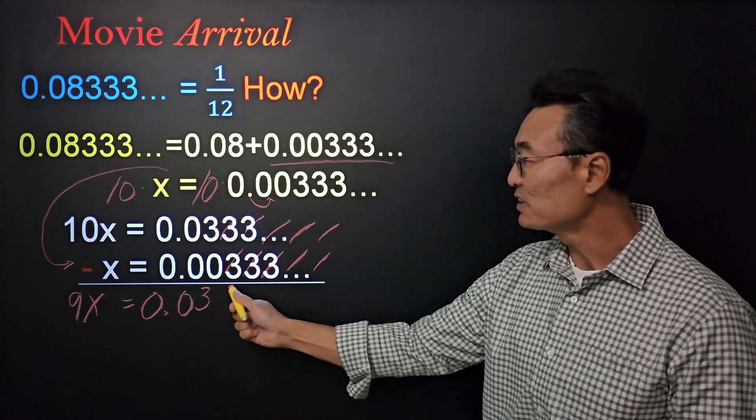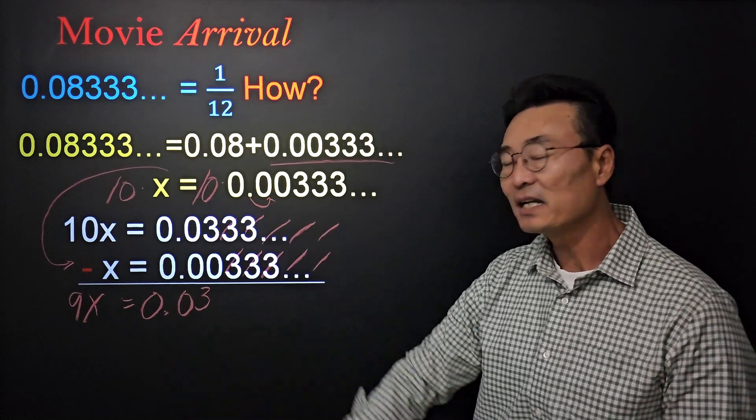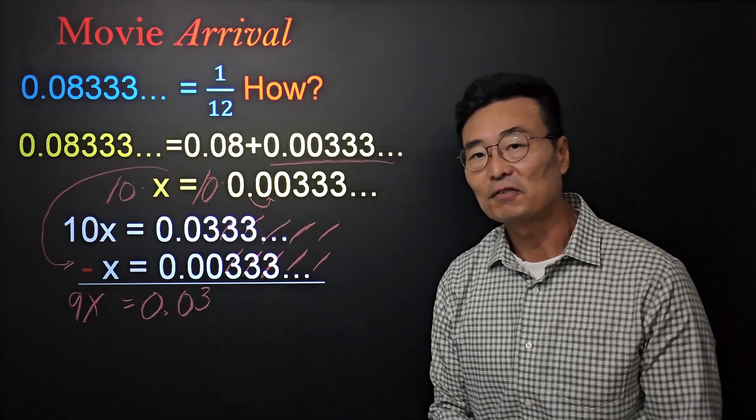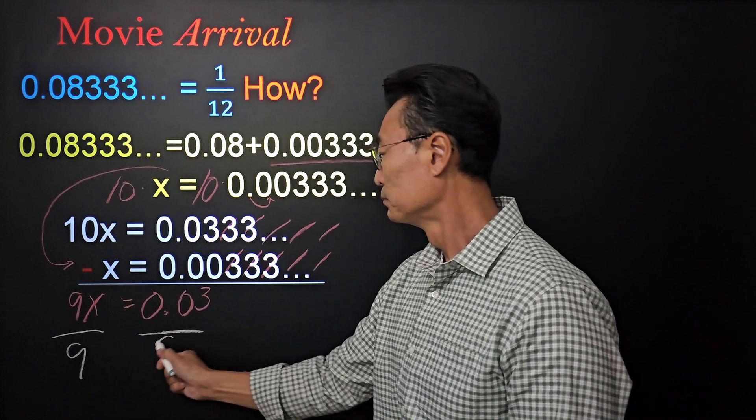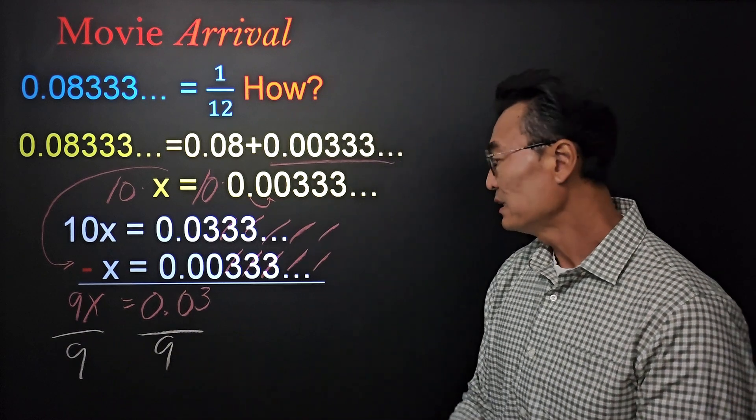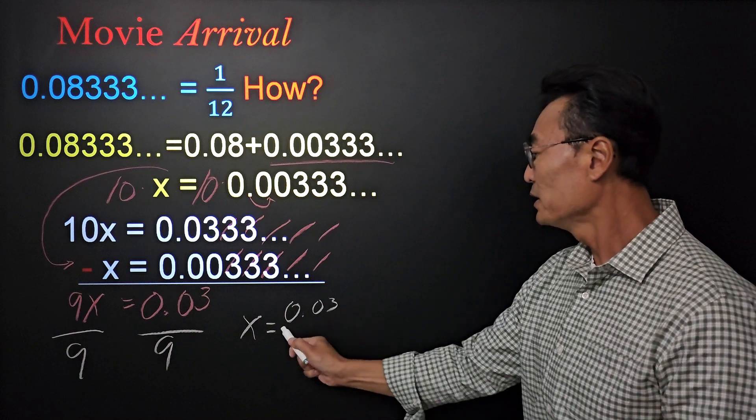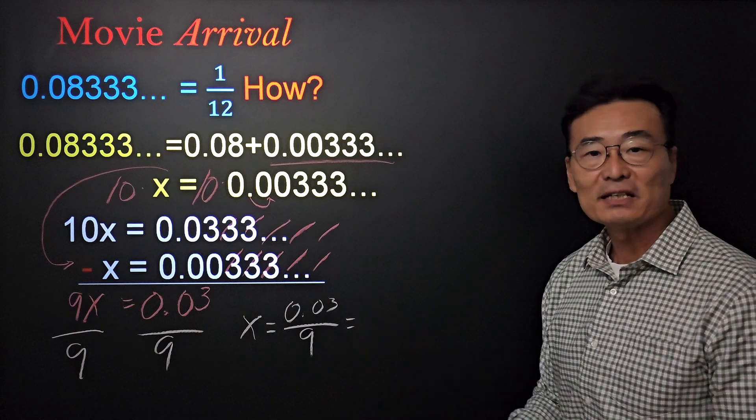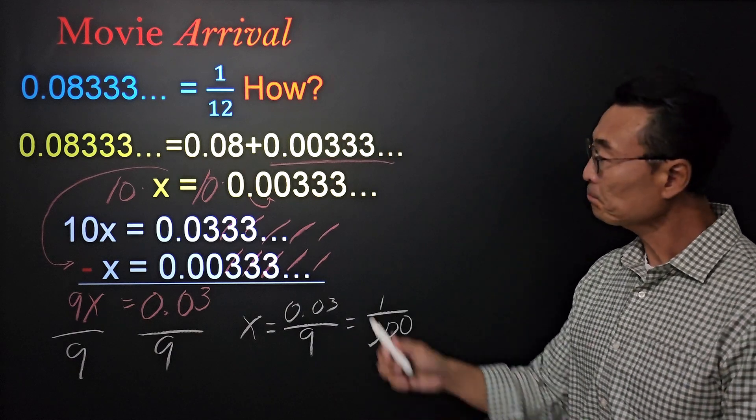So we now have 9x equals 0.03. To solve for x, I'm going to divide by 9, where we get x equals 0.03 over 9, or if you simplify this, it'll become 1 over 300. So that repeating decimal that we had, the 0.003 repeating, we've changed it into the fraction 1 over 300.